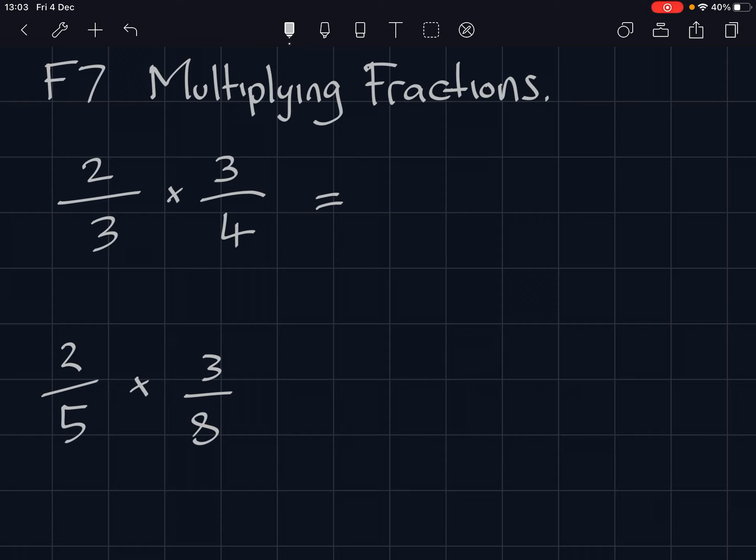All we do in essence is we times the top numbers together and the bottom numbers together. In the first example we have two times three, that's six, and three times four, that's twelve.